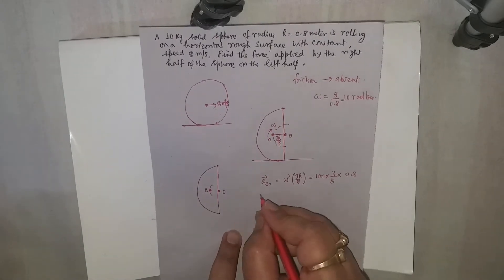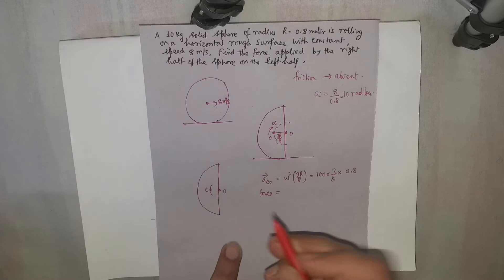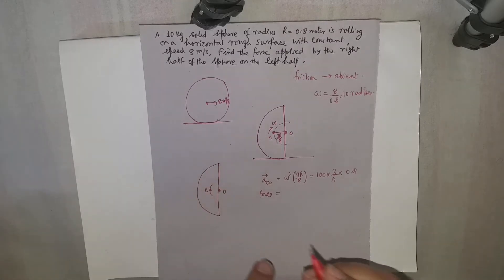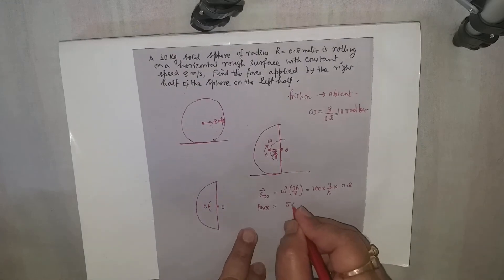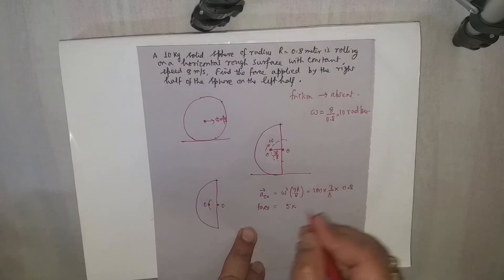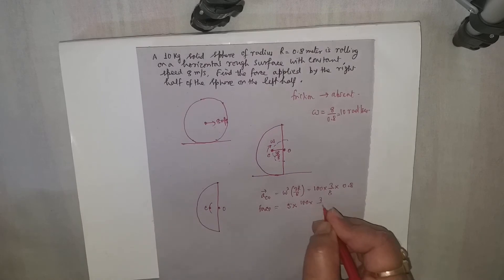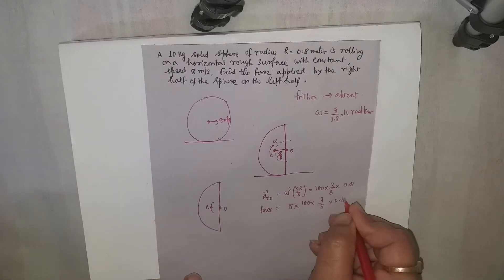Now the force acting on this hemisphere will be its mass. The mass will be of course 5 kg. So it will be 5 multiplied by this acceleration, which is 100 into 3 by 8 into 0.8.